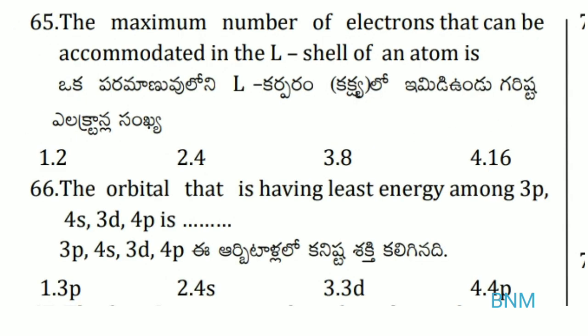The maximum number of electrons that can be accommodated in the L shell of an atom: the maximum number of electrons in a shell is 2n². For the L shell, n equals 2. So the 3rd option — 8 electrons — is the right answer.